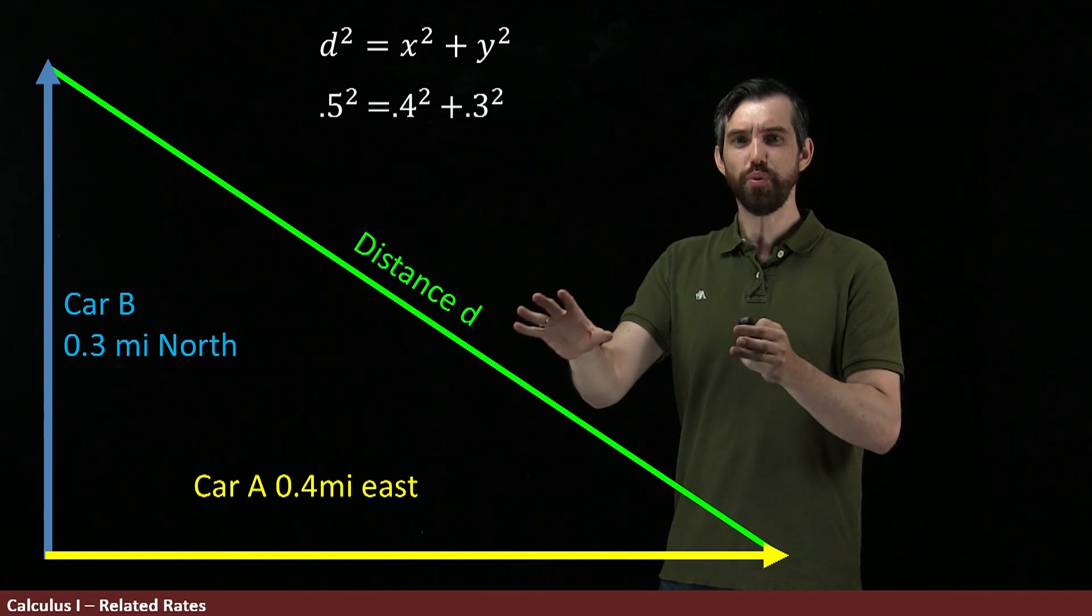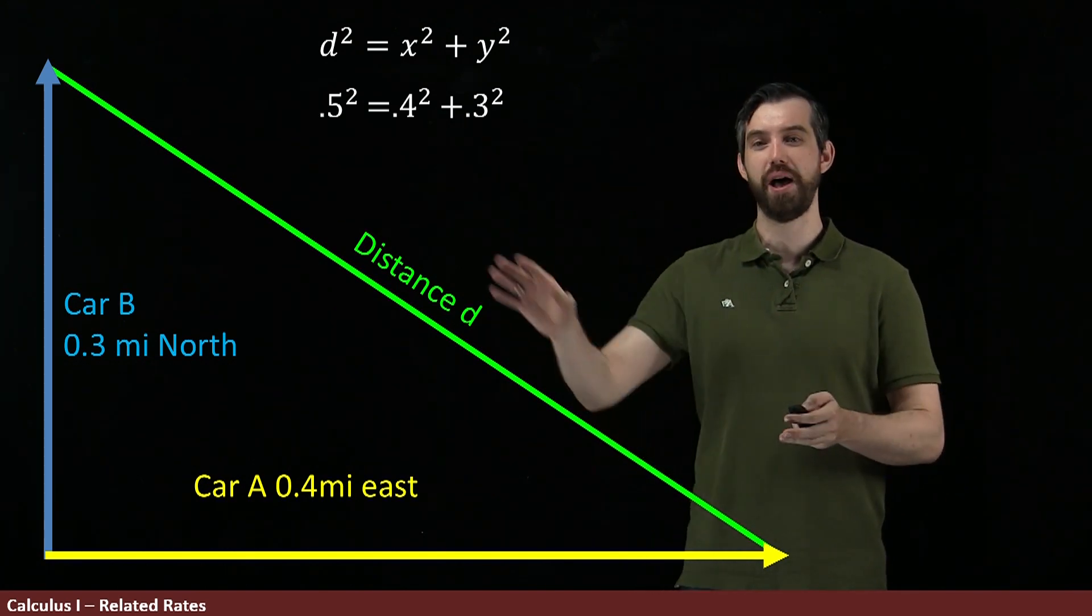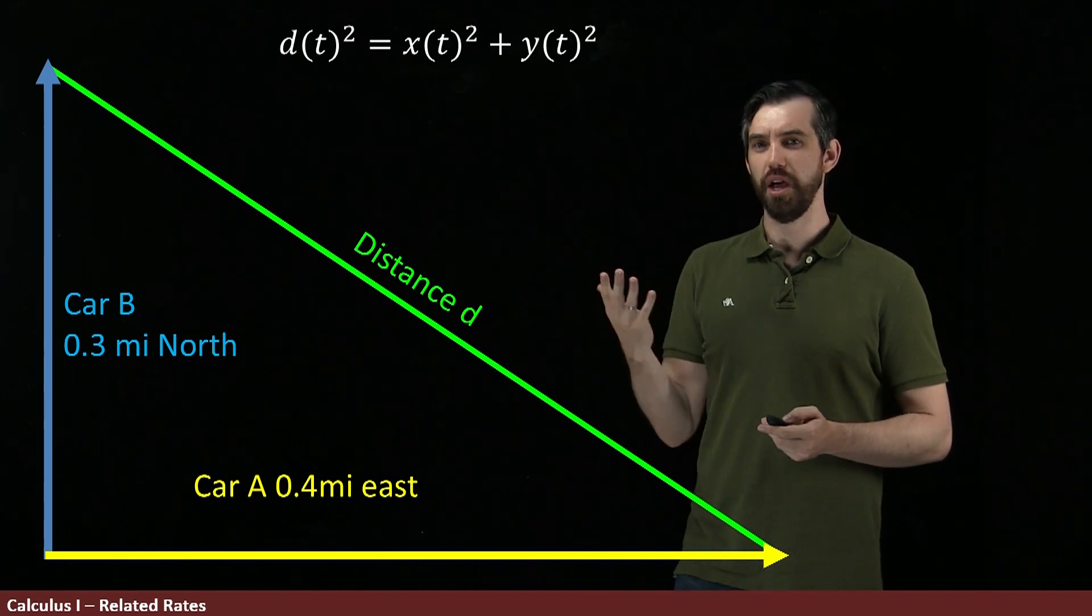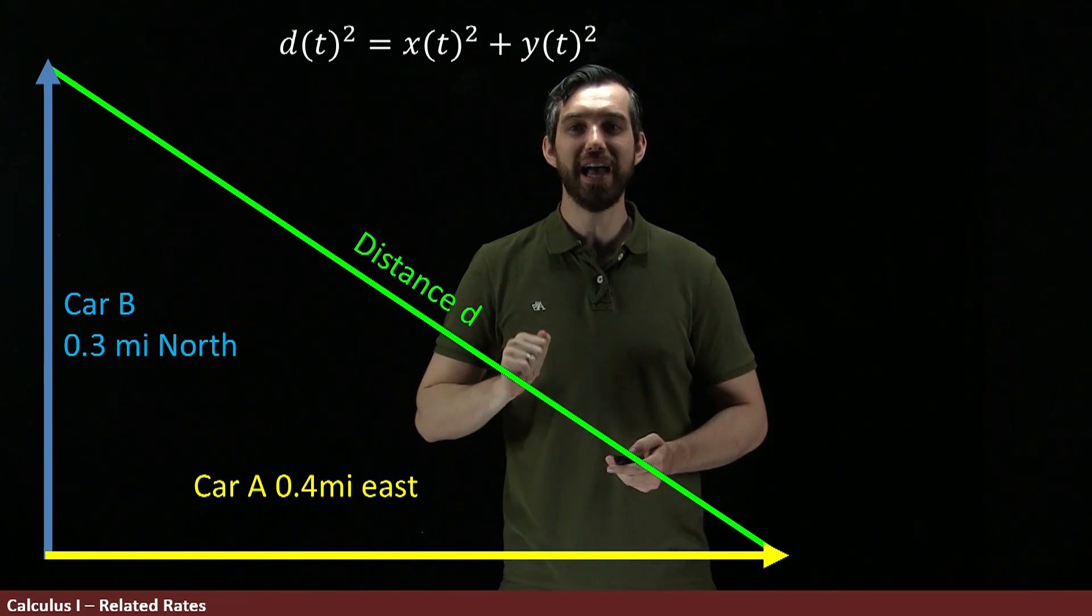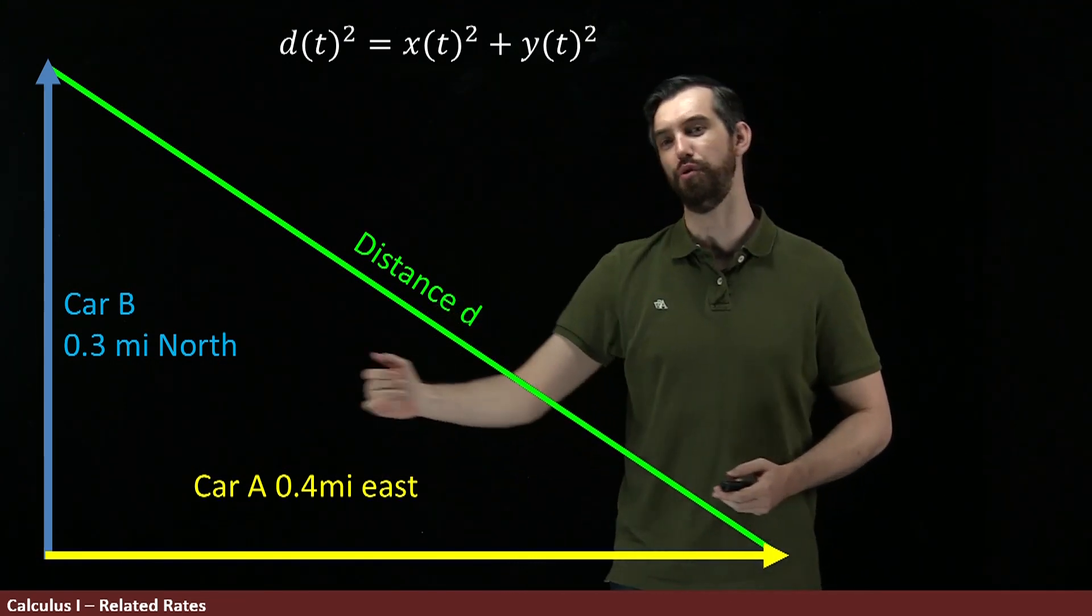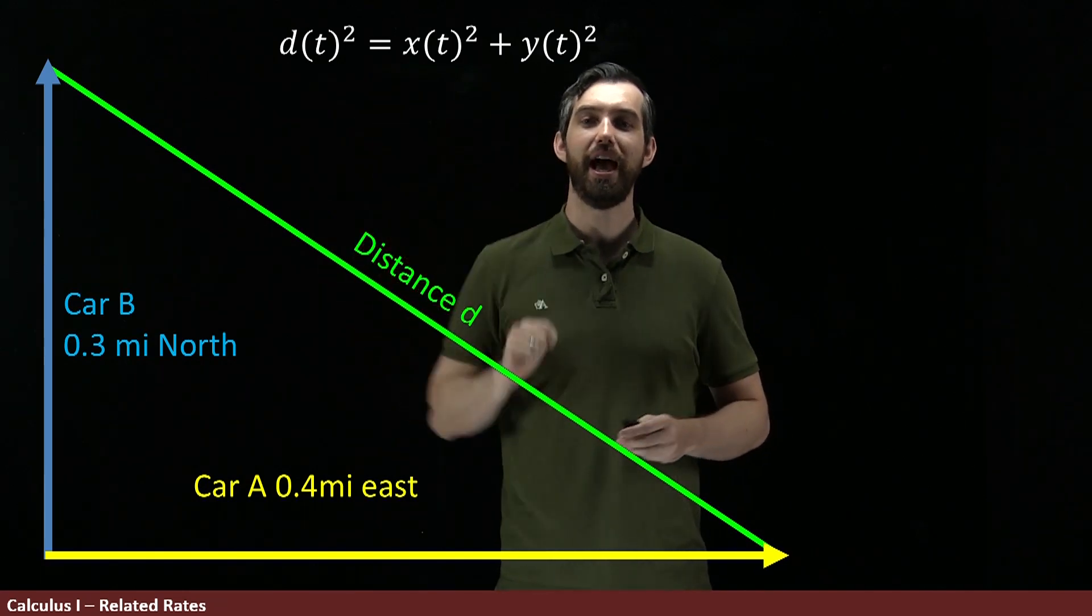And indeed, this relationship was at this specific time, this specific time when it was 0.4 miles and 0.3 miles. But I could also ask the question, what would this look like as a function of time? If I'm imagining that my car continues to move and my car B continues to move, how does my distance change as a function of time?